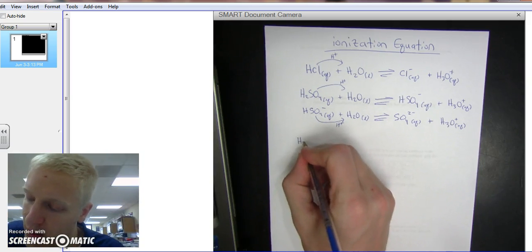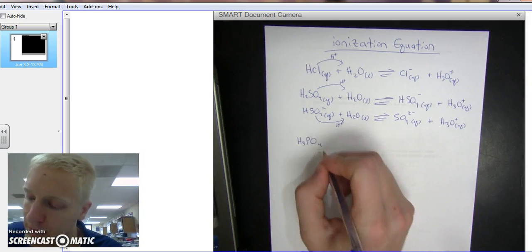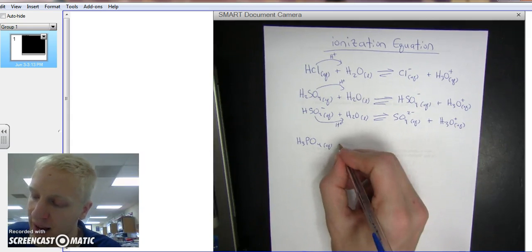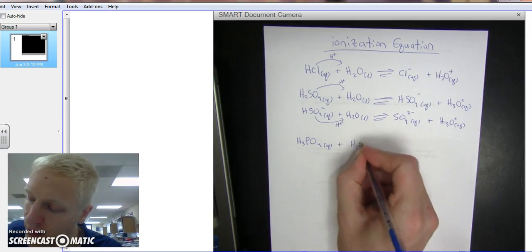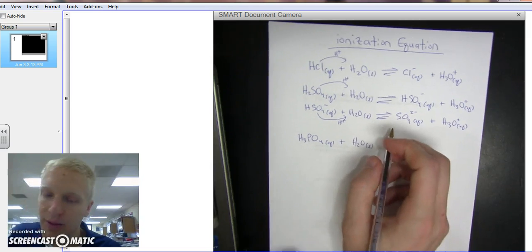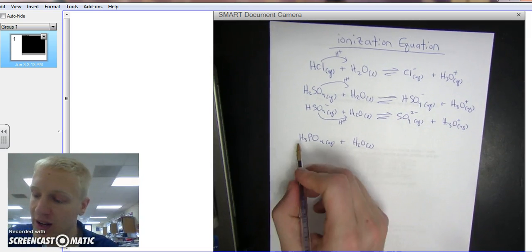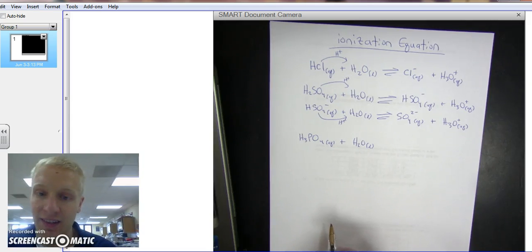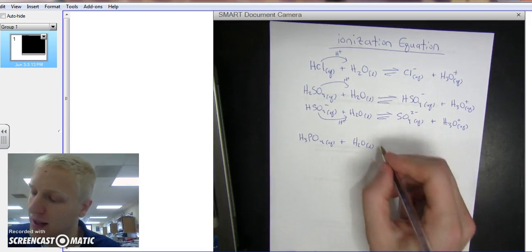Something a little more difficult, we have H3PO4, this is aqueous, it's an acid, plus H2O liquid. And right away I know this is going to have three ionization equations because there are three H's, so it's a triprotic acid.